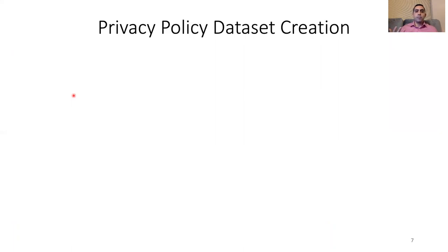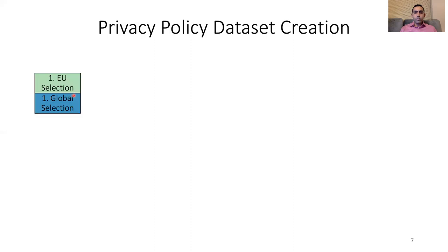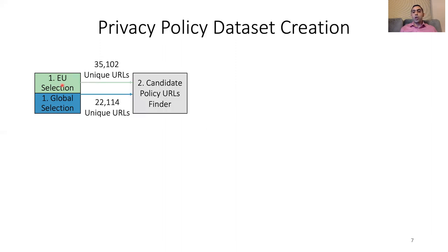Before the analysis, we describe the dataset of privacy policies we analyzed. Our first step was to curate a representative set of privacy policies. We looked at two sets: one representing EU countries and one more global. For the EU set, we queried the Alexa top site API for the top 3,000 domains for each of the EU's 28 member states, including the UK at the time, resulting in 35,000 unique URLs. For the global set, we queried the Alexa website information service for the top 1,000 popular domains in 25 categories, resulting in 22,000 unique URLs.